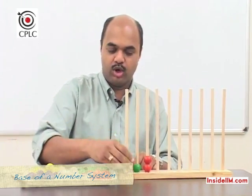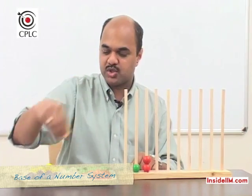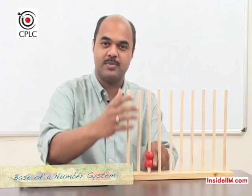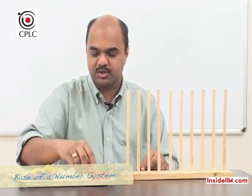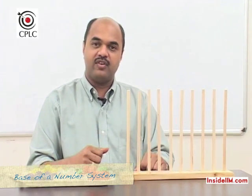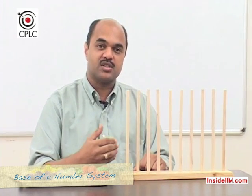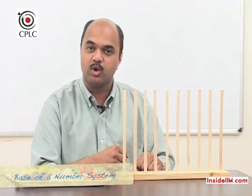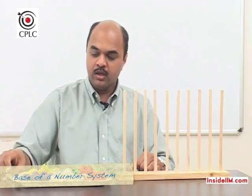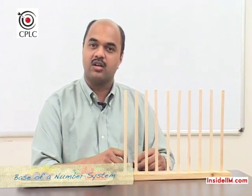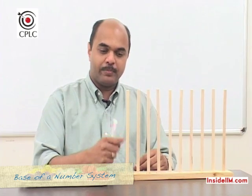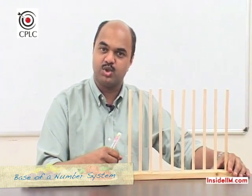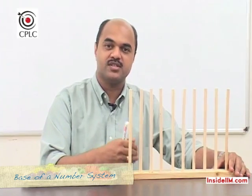This example was using base 10, which is nothing but our commonly used base system known as the decimal number system. But what if we were to represent a number in some other number system? Suppose we talk about base 8 — base 8 is also known as the octal number system. Base 8 would mean we use 8 digits, which would be from 0 to 7.